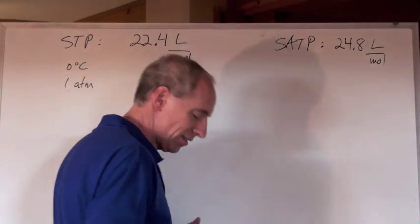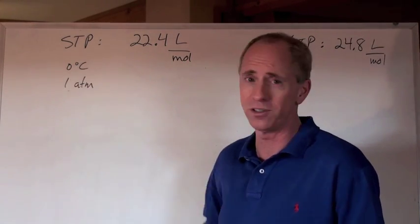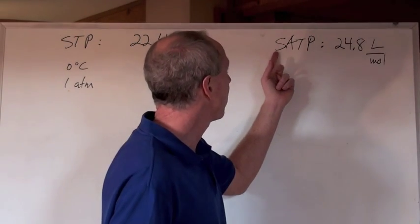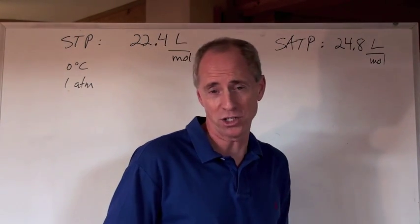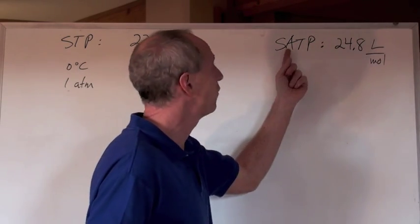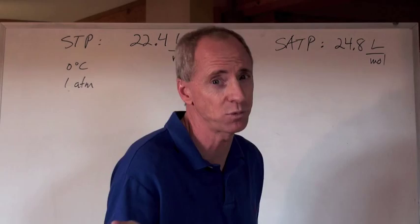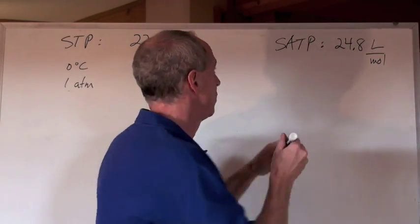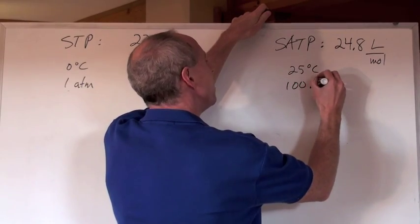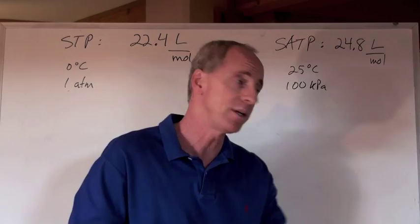SATP is for when you don't want to do the experiment at zero degrees Celsius because it's too cold. So how about Standard Ambient Temperature and Pressure — which is kind of normal, room temperature — so 25 degrees Celsius, which is still a little warm for room temperature, but that's what it is.